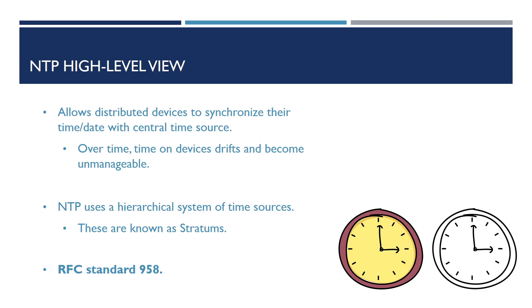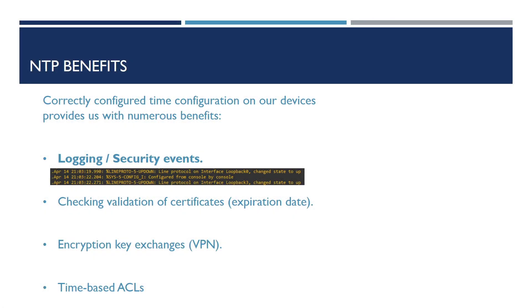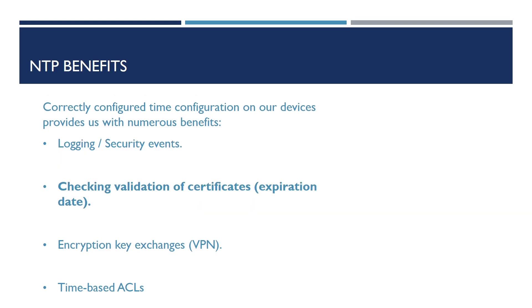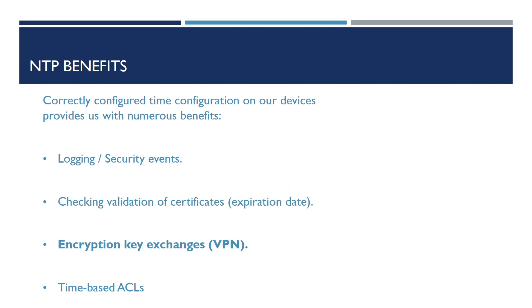NTP was formed as an RFC standard, also known as RFC 958. There are a number of reasons why you'd have NTP configured on our devices, providing a number of benefits. These include having an accurate time configured, as a lot of services depend on time in our network — including the ability to see the correct time and date stamps against our logs and security events within syslog, allowing us to pinpoint when certain events happened, such as when an interface went down or a login attempt occurred. It's also useful for checking the validation of certificates on devices, encryption keys when using key exchanges for things like site-to-site VPNs, and for time-based access controllers for restricting traffic at certain periods throughout the day.